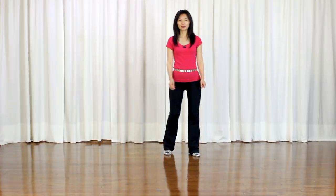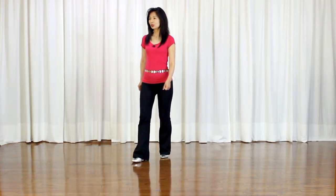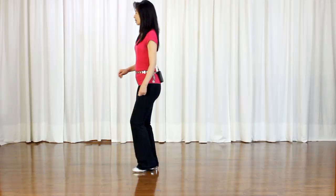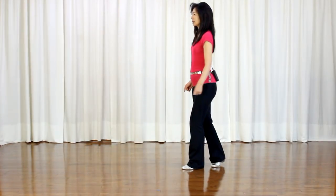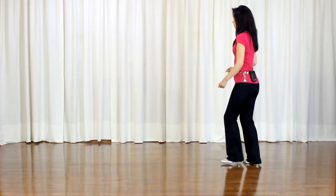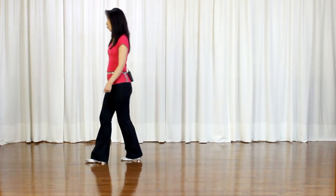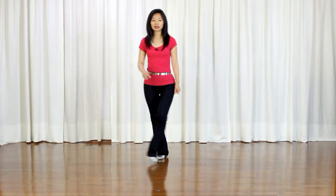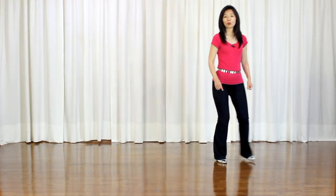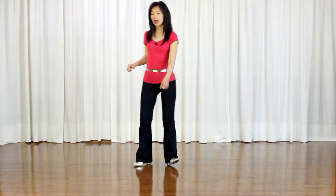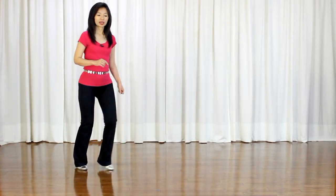In this dance there is a 32 count restart on wall 2 facing 6 o'clock. Let me show you wall 2 with counts, facing 6 to start. 1 and 2, 3 and 4 and 5 and 6, 7 and 8 and 5 and 6, 7 and 8 and 9 and 10. 1 and 2 and 3 and 4 and 5 and 6.